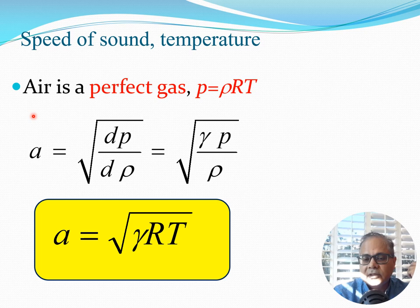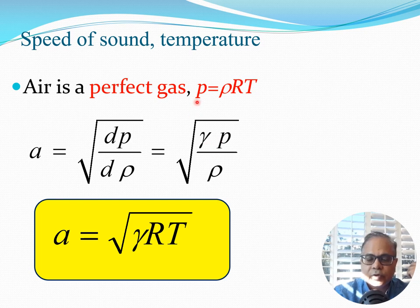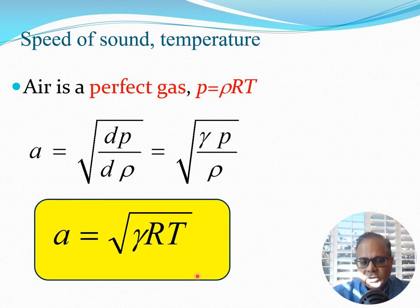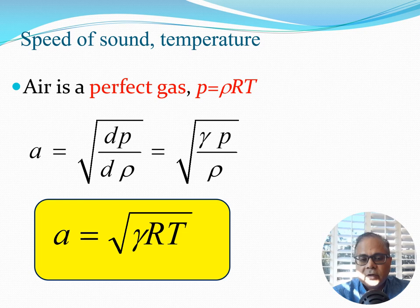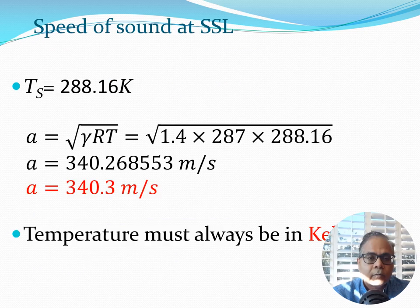A further simplification uses the perfect gas equation of state p = ρRT. Substituting into a = √(γp/ρ), the density ρ cancels, giving the elegant result: a = √(γRT). This means if you know the temperature at a point, along with γ and R for air, you can immediately calculate the local speed of sound. Intuitively, it may not be obvious that speed of sound depends on temperature, but it follows from thermodynamics and the isentropic flow assumption.